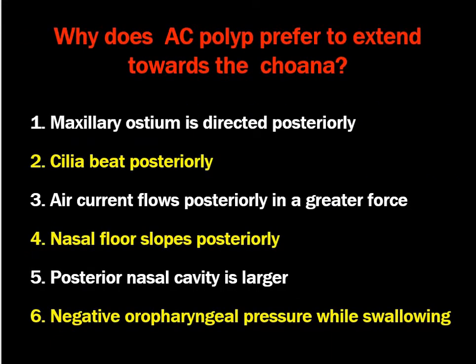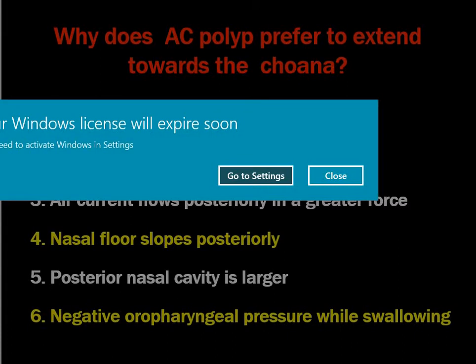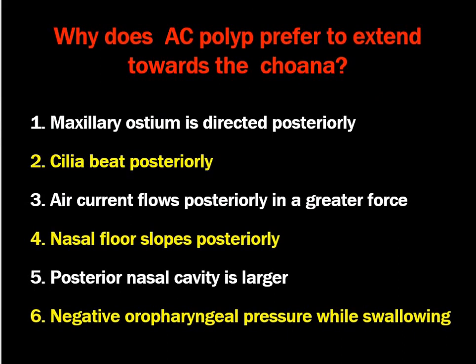Why does the antrochoanal polyp prefer to extend towards the choana? The reasons are: the maxillary ostium is directed posteriorly; the cilia also beat posteriorly; air current flows posteriorly with greater force during inspiration; the nasal flow moves posteriorly; and the postnasal cavity is larger with negative oropharyngeal pressure while swallowing. These factors all lead to the antrochoanal polyp extending towards the choana.